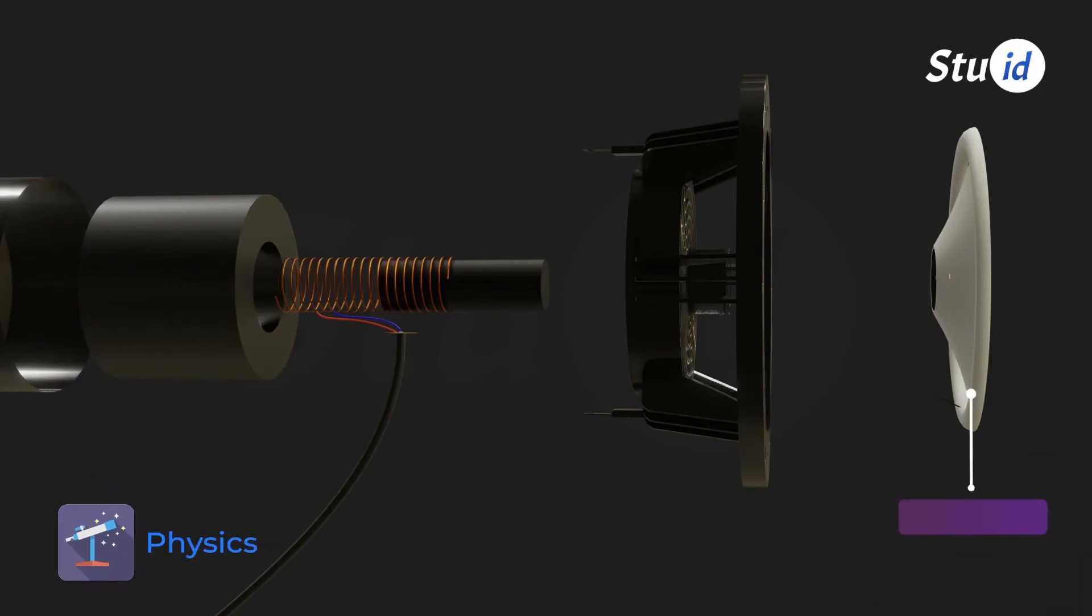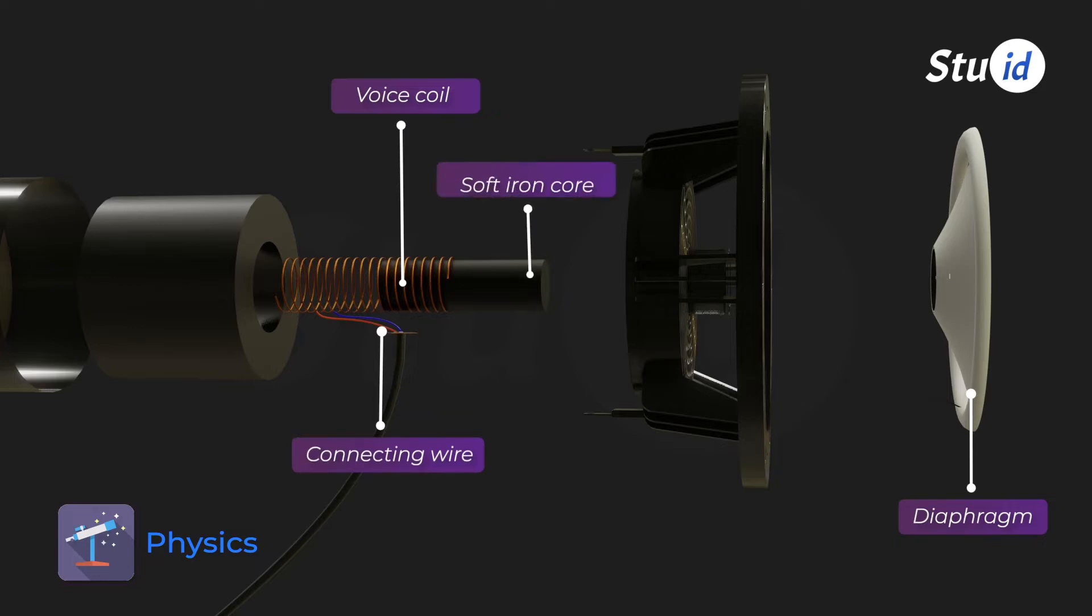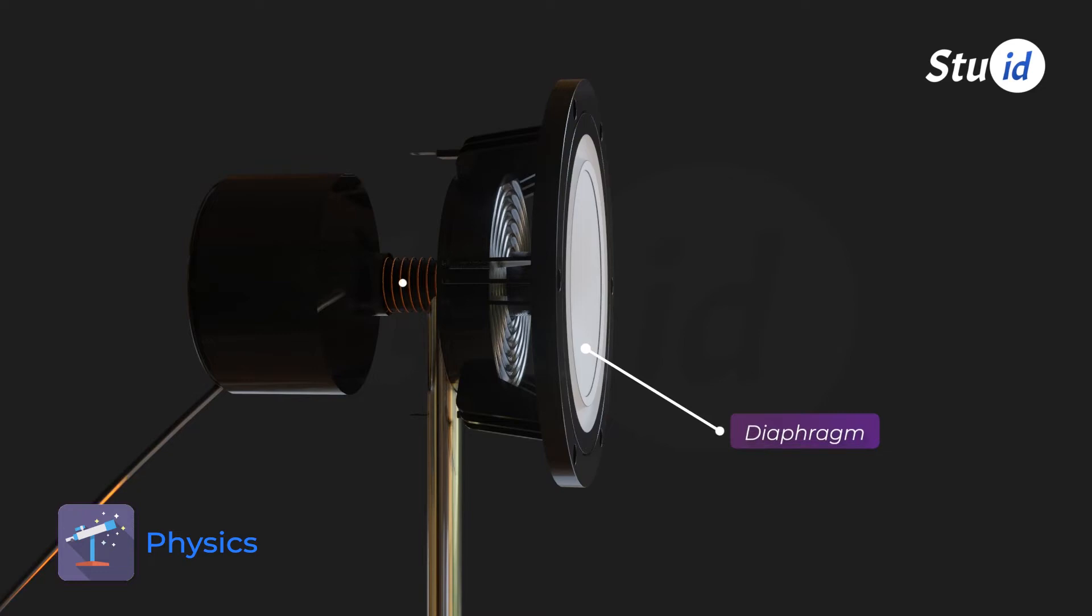First component: diaphragm. Second: voice coil. Third: connecting wire. Fourth: soft iron core. Fifth: magnetic field. These are the parts of the moving coil loudspeaker.